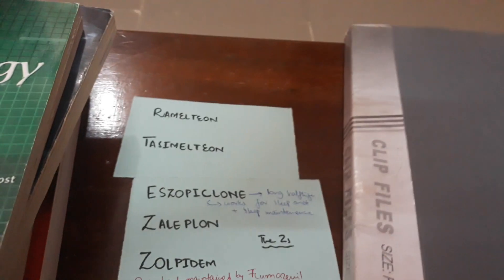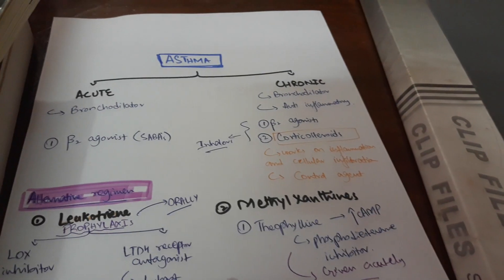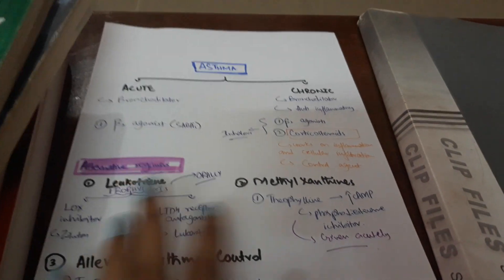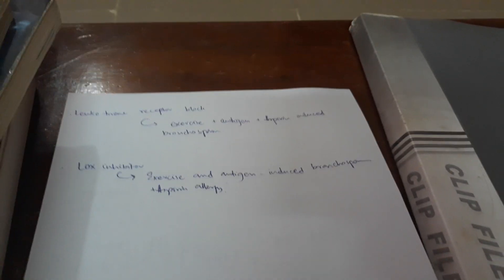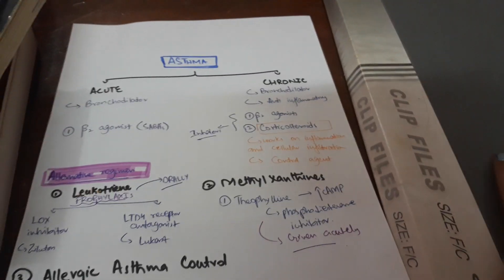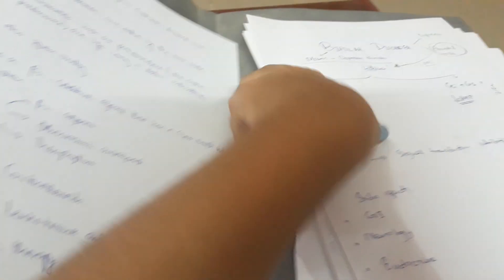Let's look at the notes. How can you make notes of pharmacology that would actually be helpful? The best way is to categorize the drugs. For example, if you have asthma drugs you have to categorize them — for acute we use one thing, for chronic something else, for prophylaxis something else. Some drugs are leukotriene-specific, some are not. So the best way to do notes is by categorizing them. Once you categorize them, it becomes so much easier to make sense of everything.